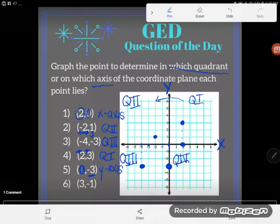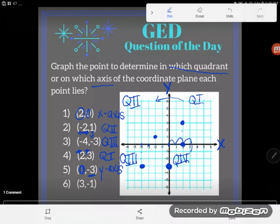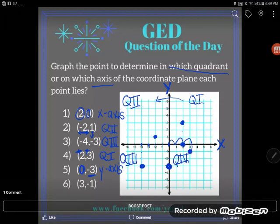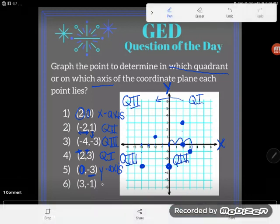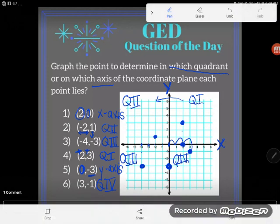And now last one, the point (3,-1). I'm going to come positive three in the horizontal direction, and then I'm going to go down one or negative one in the vertical direction. I'll end up down here. And I'm clearly in quadrant four. If you have any questions about this or anything else, drop them in the comments and I will be glad to answer them for you.